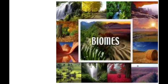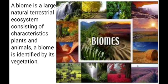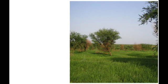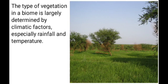First, what is a biome? A biome is a large natural terrestrial ecosystem consisting of characteristic plants and animals. A biome is identified by its vegetation — you can actually identify a biome by just looking at the kind of plant and animal in that particular environment. The type of vegetation in a biome is largely determined by climatic factors, especially rainfall and temperature.